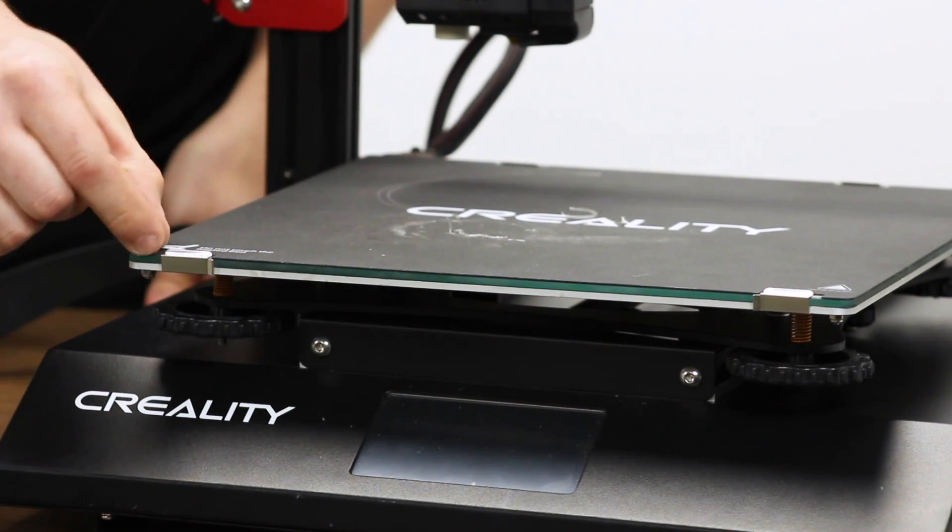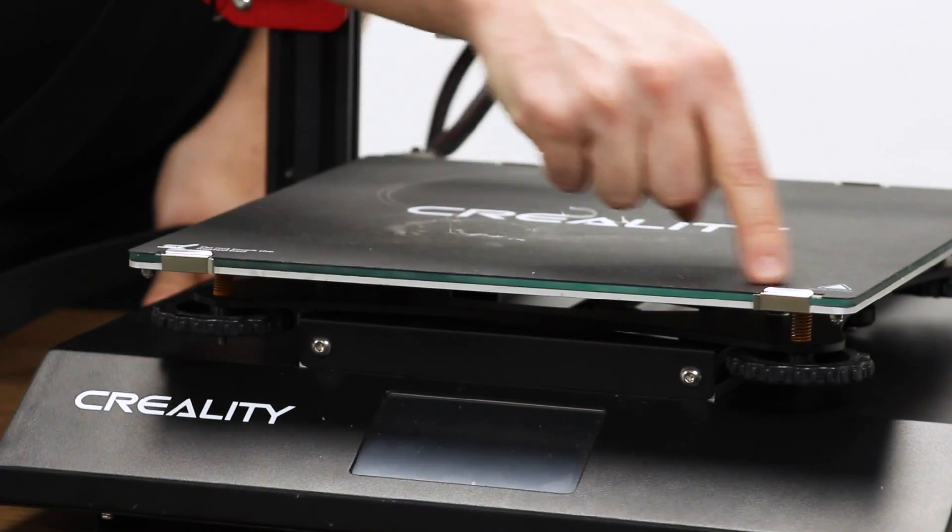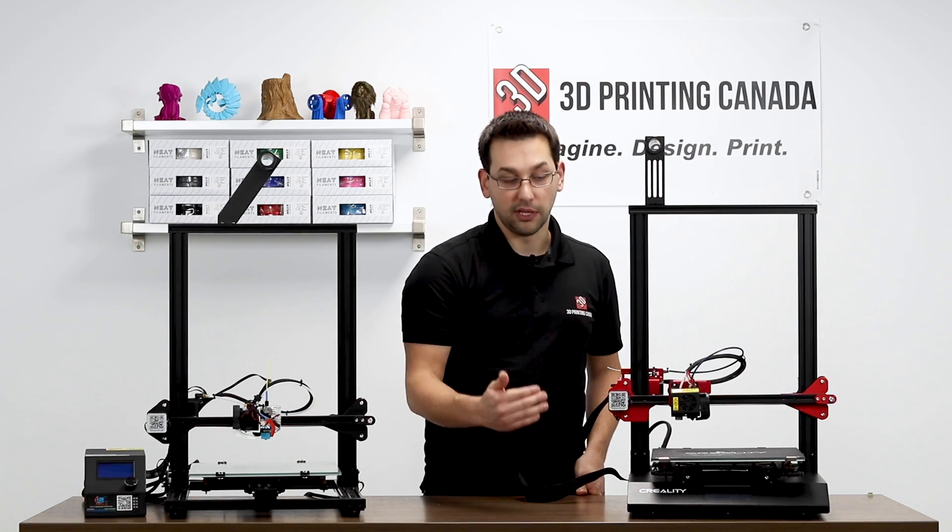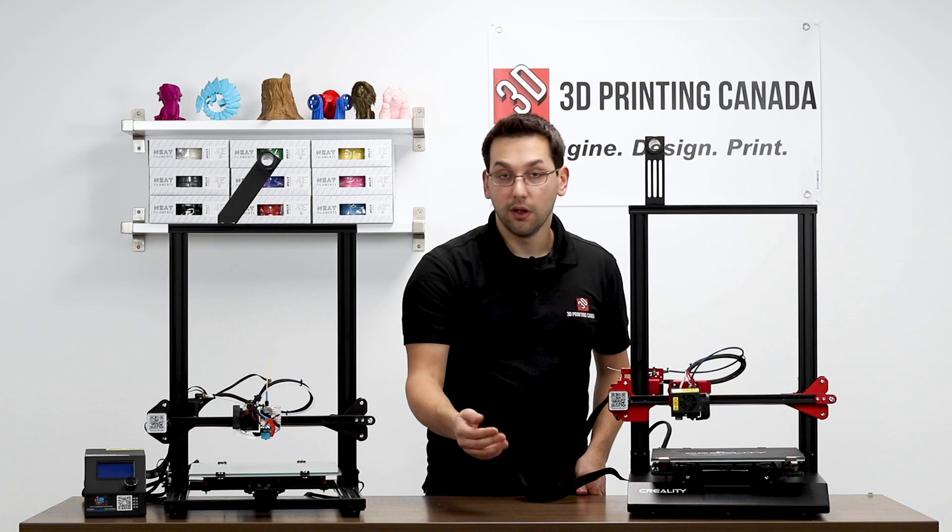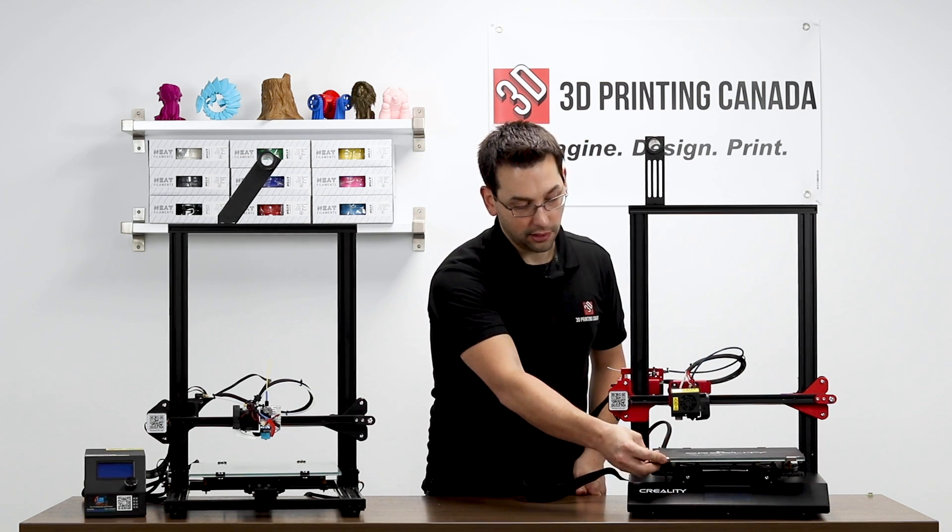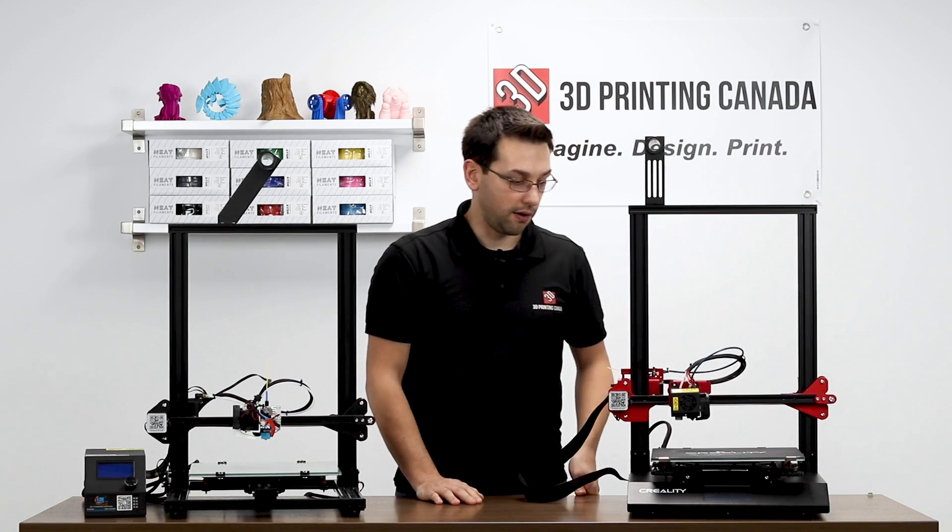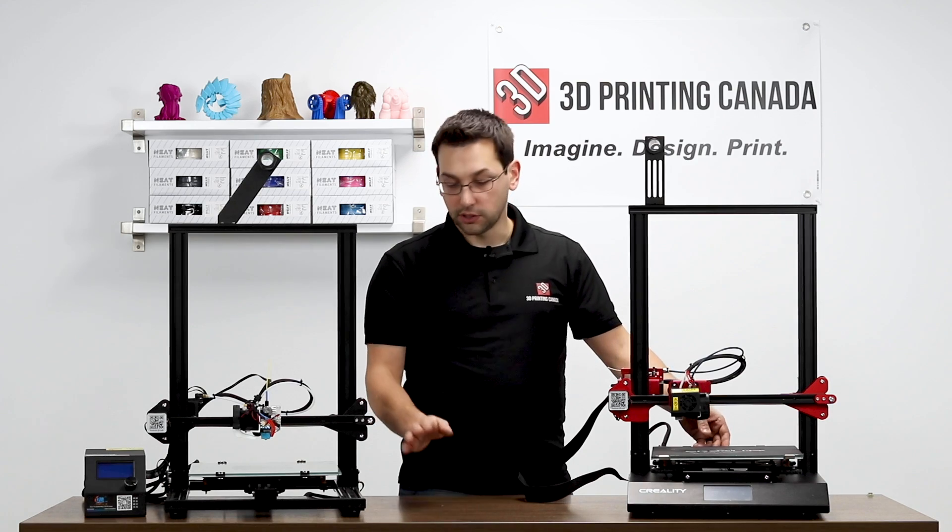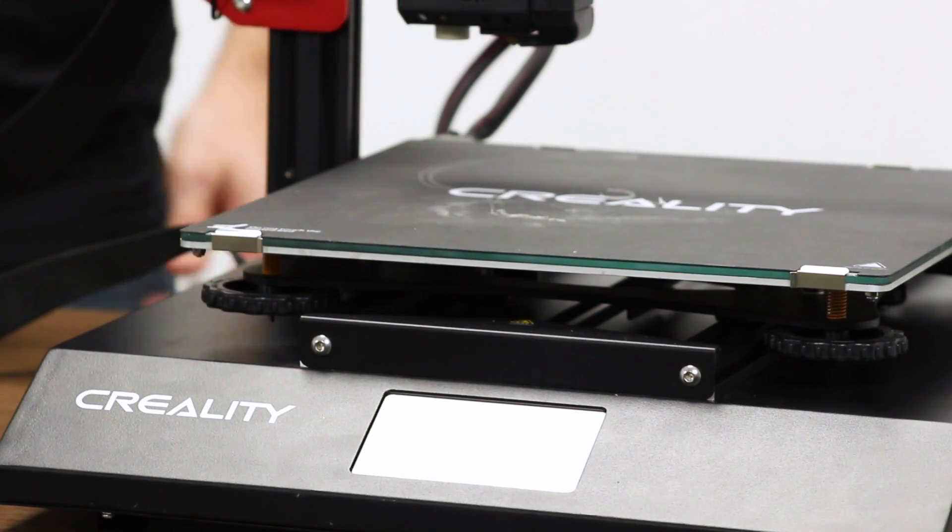Because you don't need to leave as much clearance along the front. If you're doing a purge line across the front, you don't have to worry as much about leaving, say, a 10mm or so clearance so that you don't hit the binder clips. So I'm glad that they're including that in this model like they did on the CR-X. But other than that, it would be very much the same as what we've seen on previous models.